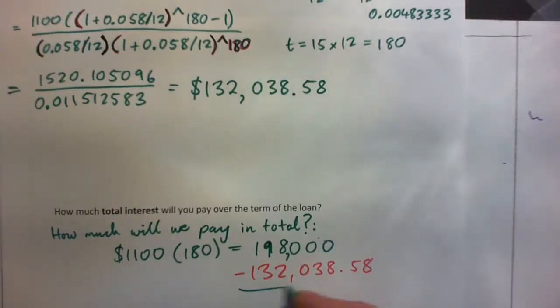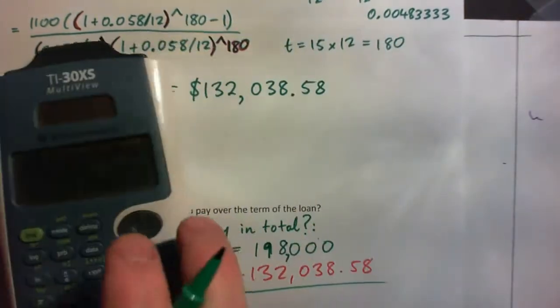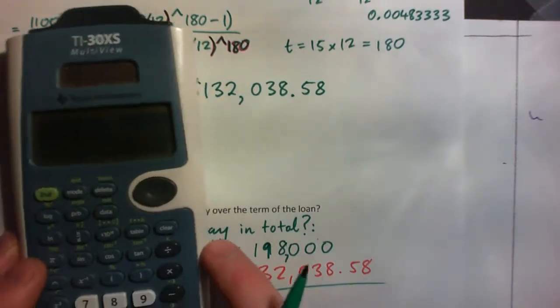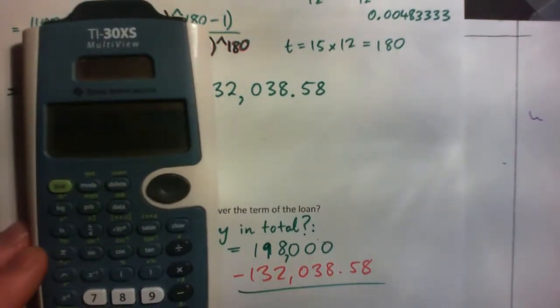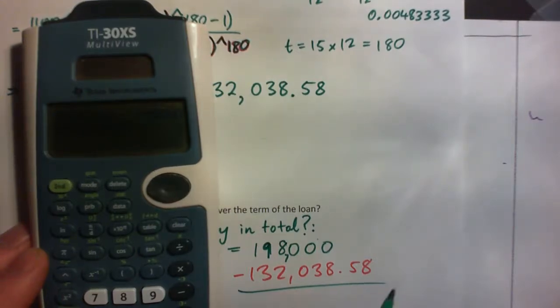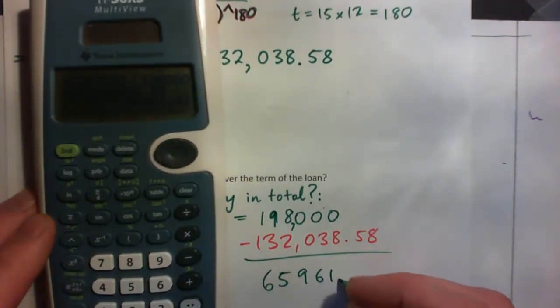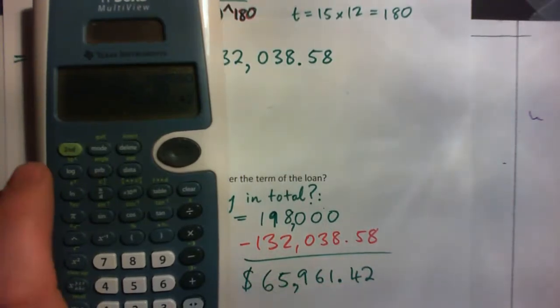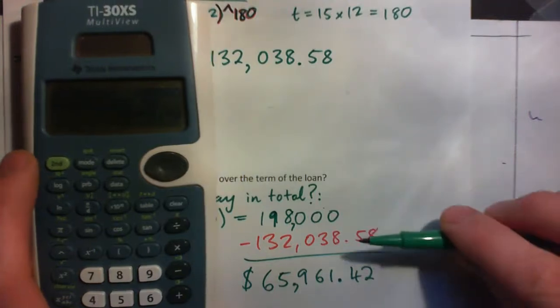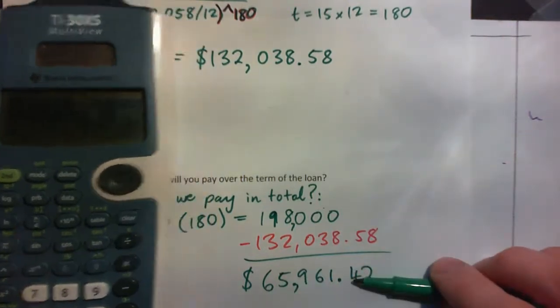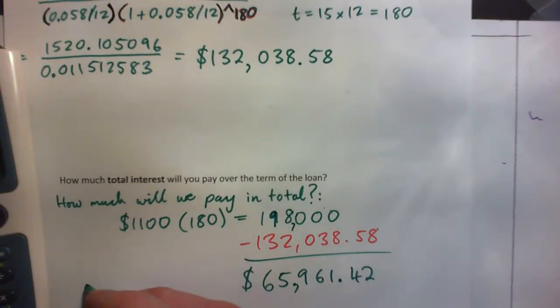Maybe we should subtract $132,038.58. Take that and subtract the amount we borrowed: $65,961.42. So that's the amount we pay in total. That's the amount we borrowed. What's this? Isn't this the total interest? Make sense? That's the total interest.